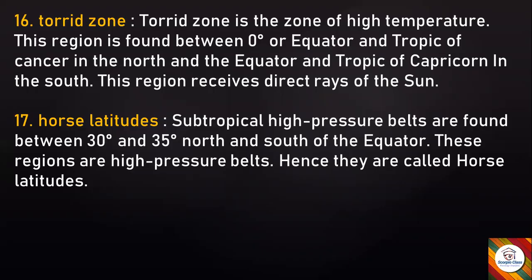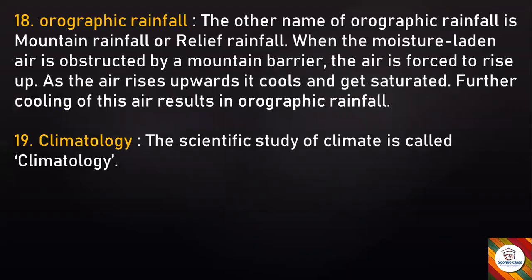Horse latitudes are found between 30 degrees and 35 degrees north and south of the equator. These regions are high-pressure zones, hence they are called horse latitudes. Orographic rain: The other name of orographic rainfall is mountain rainfall or relief rainfall. When moisture-laden air is obstructed by a mountain barrier, the air is forced to rise up. As the air rises upwards, it cools and gets saturated. Further cooling of this air results in orographic rainfall.